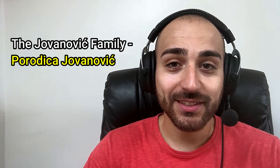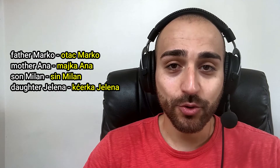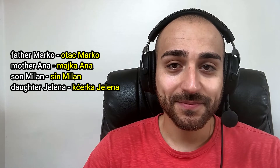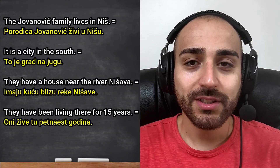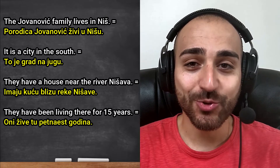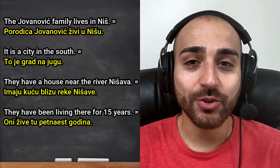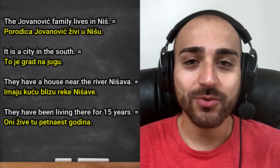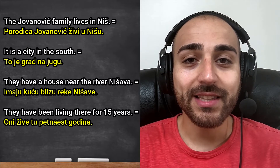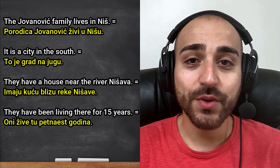The Jovanović family lives in Niš. It is a city in the south. They have a house near the river Nišava. They have been living there for 15 years.